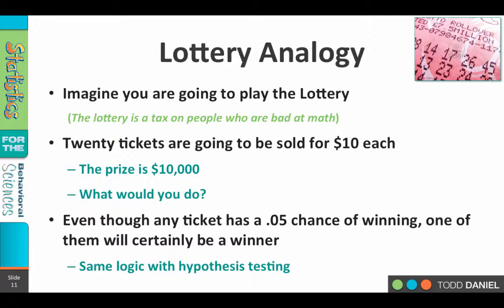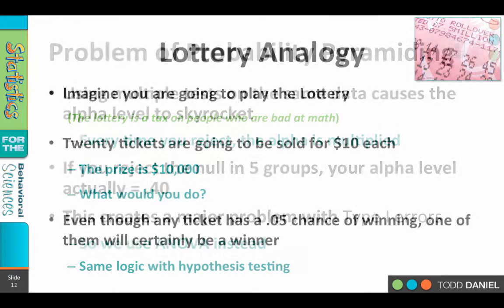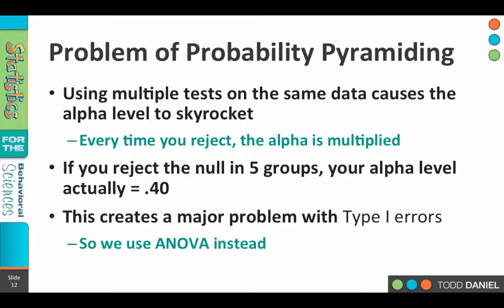The same logic applies with hypothesis testing. Imagine that we do 20 t-tests, each one having a 0.05 chance of a type 1 error. What do you think is going to happen? Over time, one of those t-tests is going to be in error — one of them is going to be a mistake, a type 1 error. And which one will it be? You don't know. You can't predict it, and you can't even find out post hoc. All you know is that if you run enough tests, you are going to make an error. This is called the problem of probability pyramiding. When you do multiple t-tests on the same data, your alpha level just skyrockets, because every time you reject the null hypothesis, that alpha level becomes multiplied.